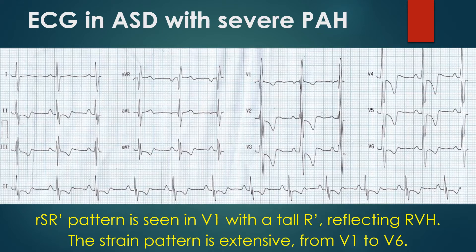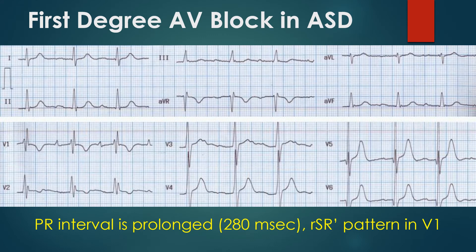RSR' pattern is seen in leads 3 and AVF as well. An additional S' wave in leads 2 and AVF and notching of the downstroke of the R' in lead 3 suggest fragmented QRS per new terminology. PR interval is prolonged and measures 280 ms. There is also incomplete right bundle branch block with RSR' pattern in V1 and a QRS width of 110 ms.